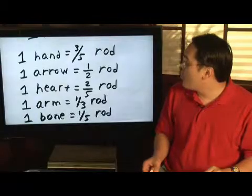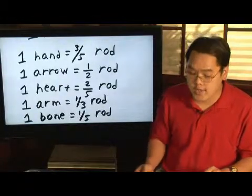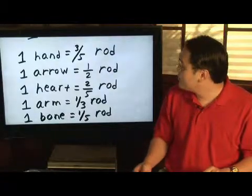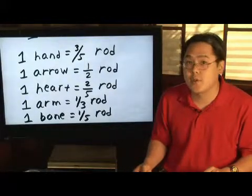First, you have one hand, which is equal to 3 fifths of one rod. One arrow, which is equal to half a rod. Now, there are three other major symbols that they were able to decipher.